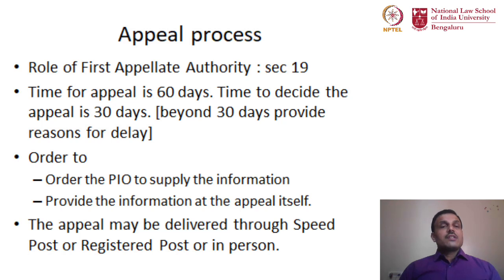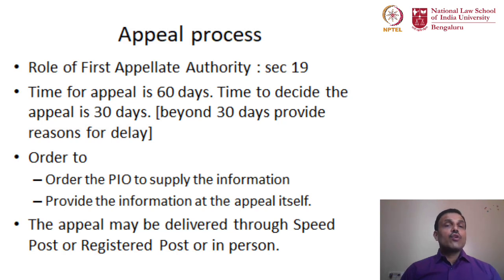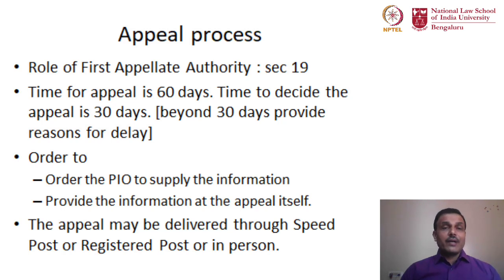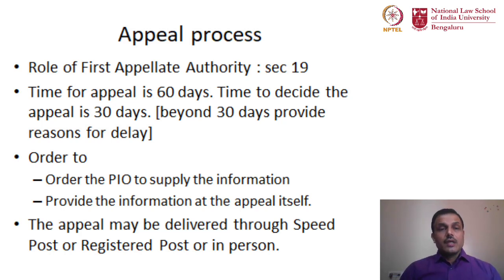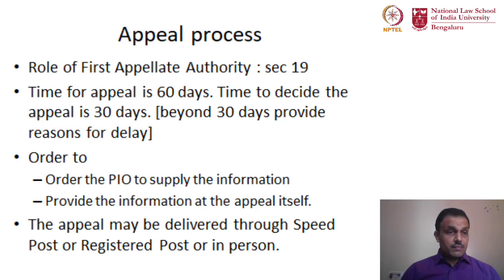An important question is how the First Appellate Authority operates under the RTI Act. First and foremost, the First Appellate Authority has no power to impose penalty on a Public Information Officer. The power to impose penalty on the PIO under Section 20 lies only with the Information Commissions. The First Appellate Authority has this as a clear limitation to his powers.